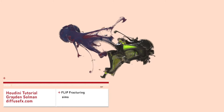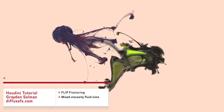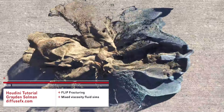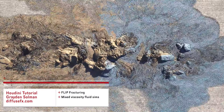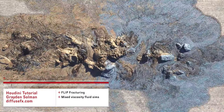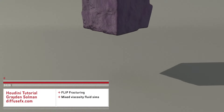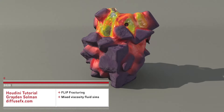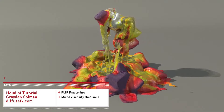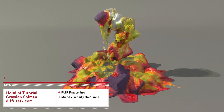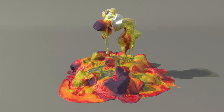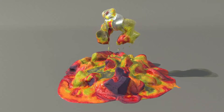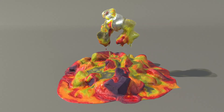Hi folks. Today I want to share a fun little effect I've been working on. This is giving a way to emulate fracturing within a FLIP simulation, providing a gooier sort of destruction workflow. It's basically applying the regular destruction workflow you'd use in RBDs, but emulating that in FLIP using viscosity instead. So let's go ahead and get started.